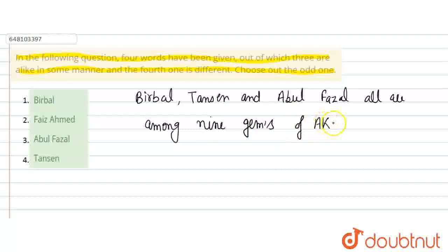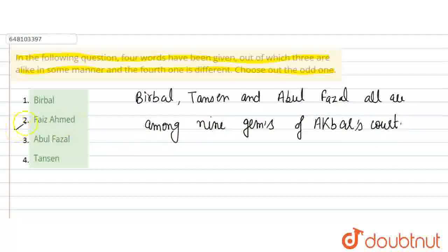जो Akbar का court था, उसके nine gems में से कोई संगीत गाता था, कोई कुछ करता था. तो यहाँ पे जो अलग है, वो आपके पास Faiz Ahmed है, जो की एक writer है. So option number two, Faiz Ahmed is the different one and here is the odd one. Thank you.